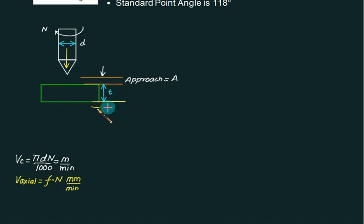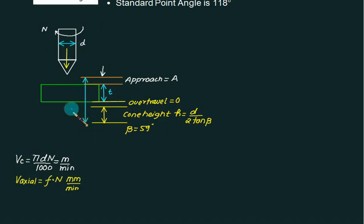The tool has to cover extra distance equal to over-travel plus cone height. Over-travel is represented by o, and cone height h equals d/(2 tan β), where β is 59 degrees by default. The total length l equals approach plus thickness plus over-travel plus cone height. So l = A + t + o + h. The time is calculated by dividing this distance by the axial speed v_axial, which equals fn.